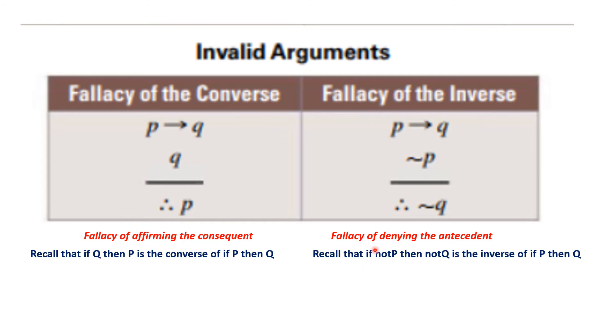Another fallacy is the fallacy of the inverse. And this is also called the fallacy of denying the antecedent. And this is if P then Q, not P, therefore not Q. And recall that if not P then not Q is the inverse of if P then Q.